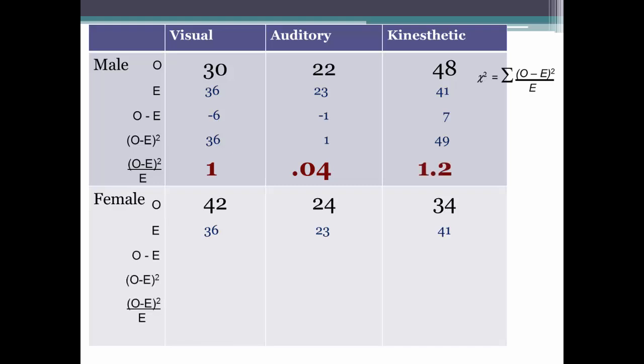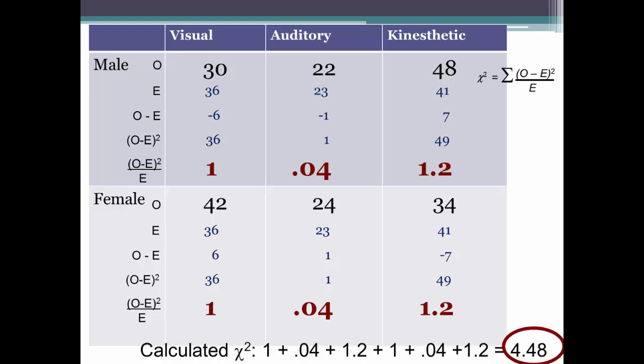Do exactly the same calculations for each of the cells for females. Again, don't get excited because the resulting numbers are mirror images of each other. The last step to calculate the chi-square is to add all those numbers together, which will equal 4.48.